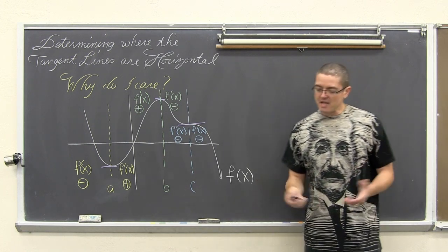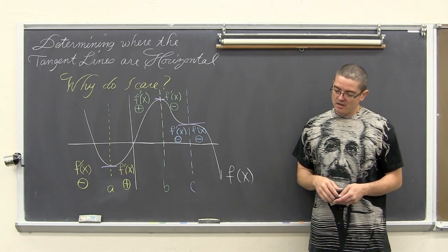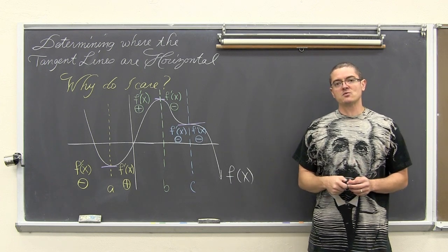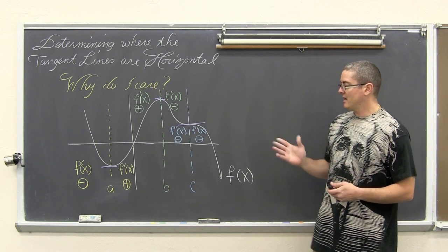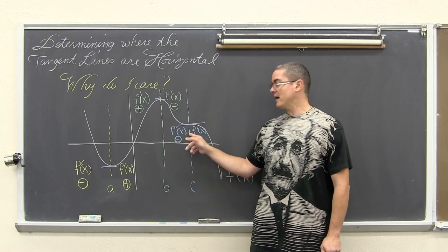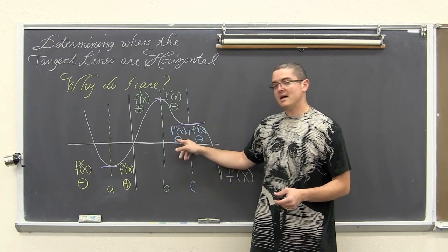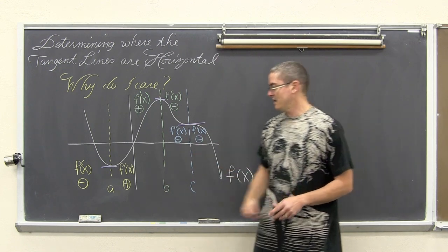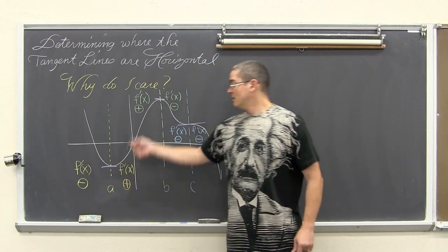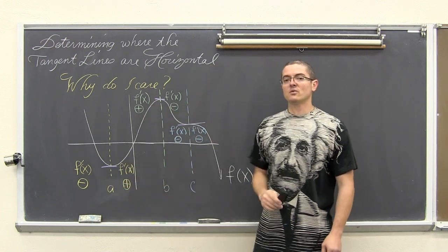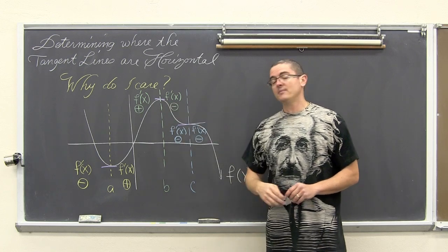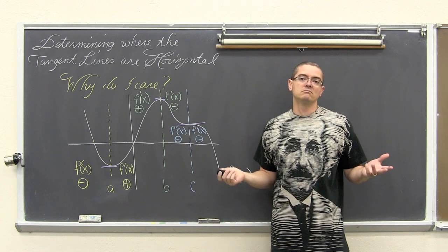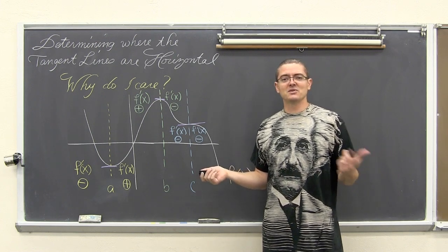We are going to do two examples: one with just a normal polynomial and another with trig functions and a little use of the chain rule. We are going to find where those derivatives are equal to zero. Once you find those x values you can plug in a number a little bit less and a little bit higher and look for sign changes. Negative on the left, positive on the right: relative min. Positive on the left, negative on the right: relative max. No sign change means not a relative maximum.